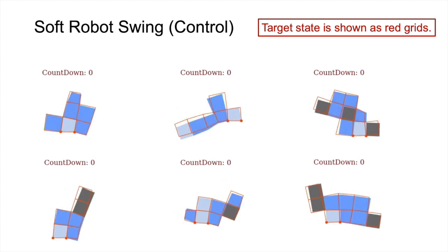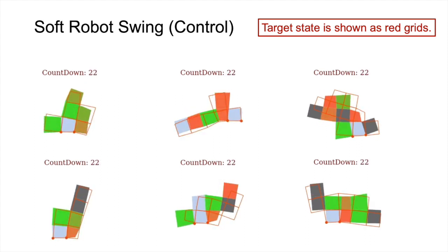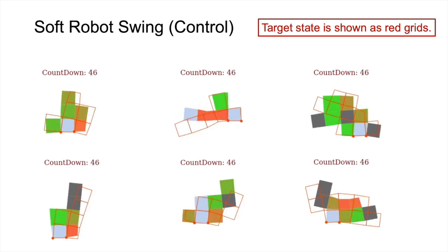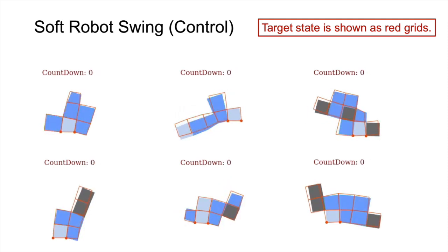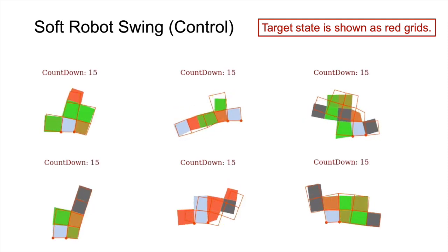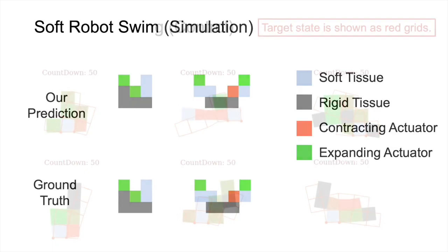Now let's see some control results of swinging the soft robot to a certain shape. The target shape is shown as red greens. Note that, each test case has different number of boxes with different stiffness.